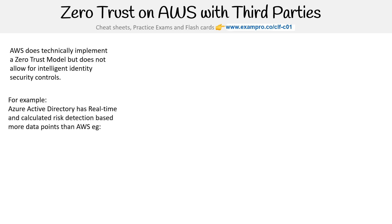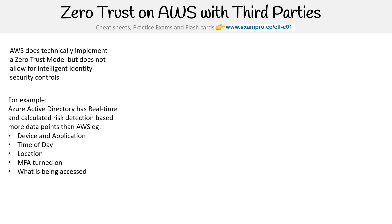For example, Azure Active Directory has real-time and calculated risk detection based on data points, compared to AWS. This is based on device and application, time of day, location, whether MFA is turned on, what is being accessed, and the security controls verification or logic restriction is much more robust.